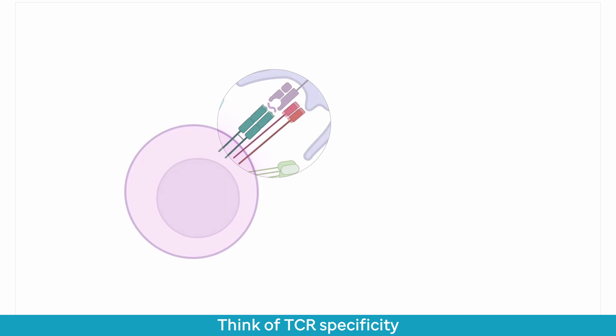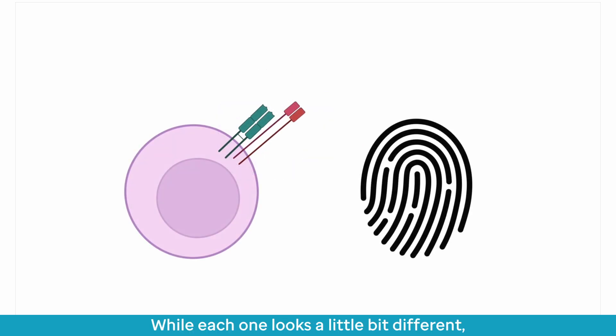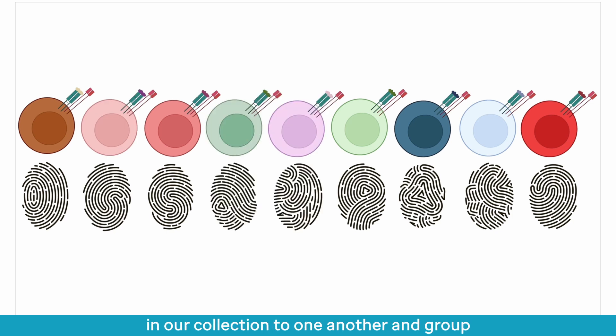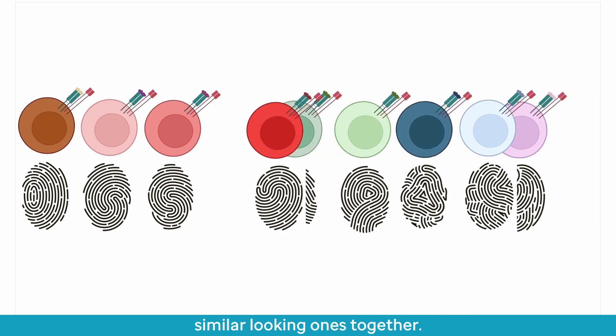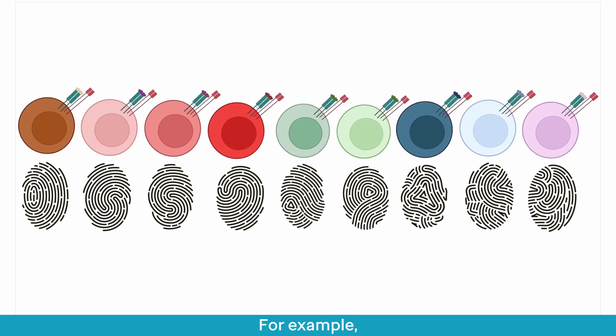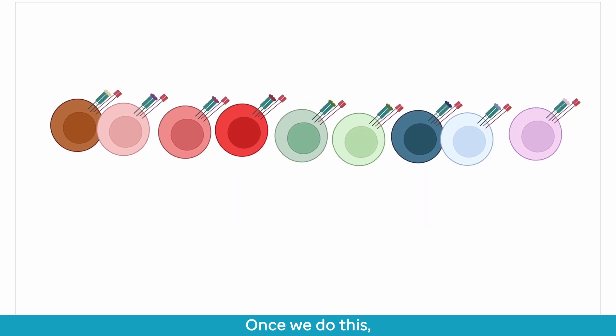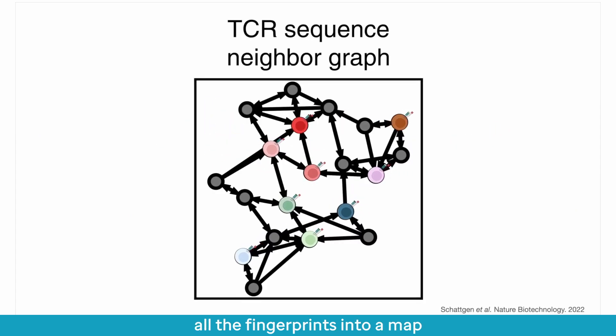Think of TCR specificity as a cell's fingerprint. While each one looks a little bit different, we can compare all the fingerprints in our collection to one another and group similar looking ones together. For example, one set might have some loops or swoops in a certain spot. Once we do this, we can then arrange all the fingerprints into a map where similar fingerprints are located close to one another in connected communities of neighbors.